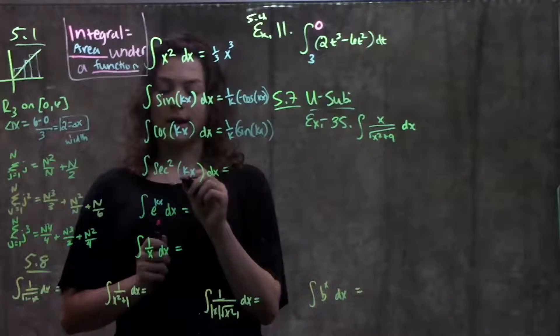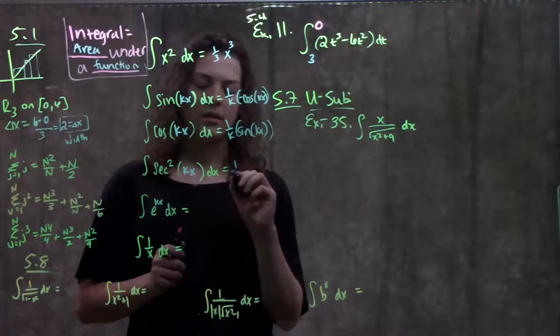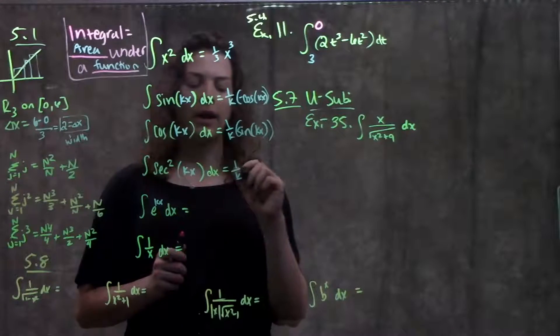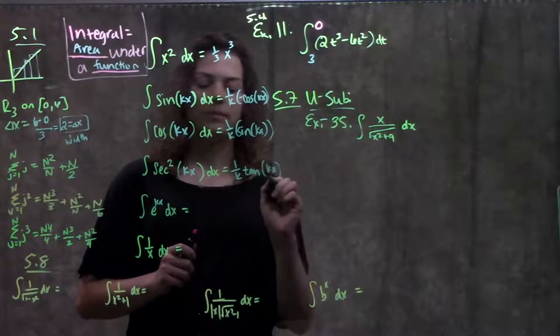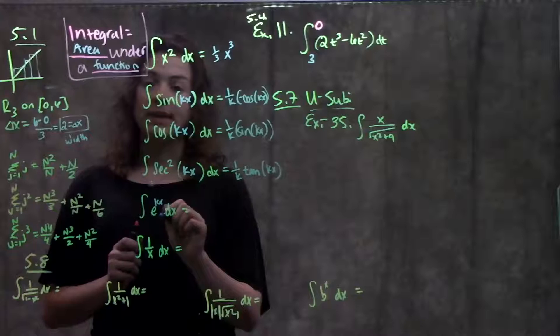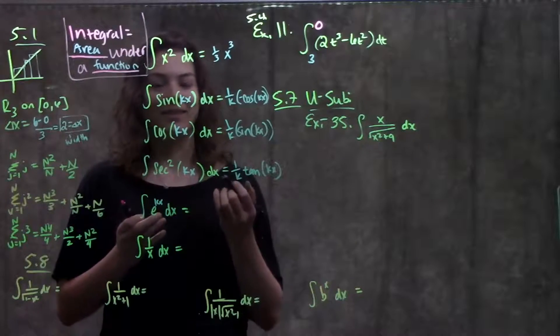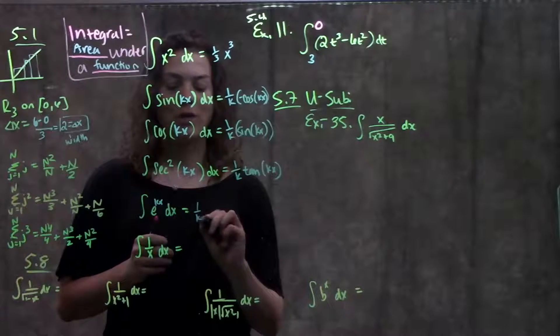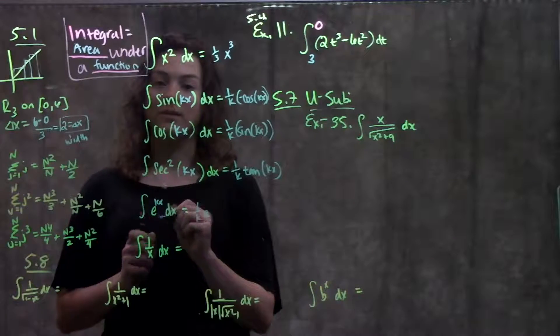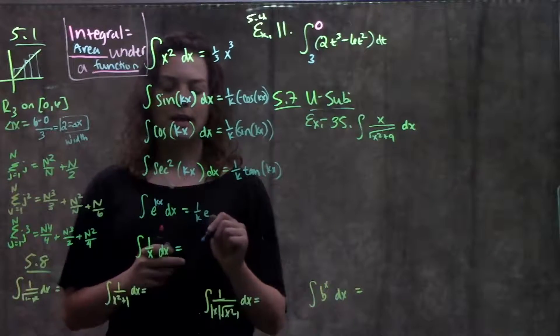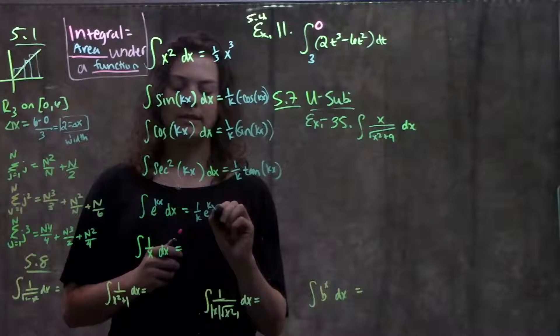Integral of secant squared kx, same thing. Flip the k, bring it out to the front. Integral of secant squared is just tangent of this same angle. Integral of e to the kx is, you might be seeing a pattern here, 1 over k times - remember how the derivative of e to the x was just e to the x. Same thing here, integral of e to the x is e to the kx.